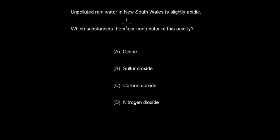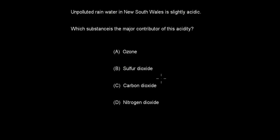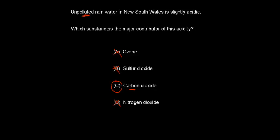Next question: unpolluted rainwater in New South Wales is slightly acidic. Which substance is the major contributor to this acidity? A, ozone. B, sulfur dioxide. C, carbon dioxide. D, nitrogen dioxide. The correct answer is C. Carbon dioxide is the substance that contributes most to the acidity of unpolluted rainwater. Nitrogen dioxide and sulfur dioxide are associated with pollution, not unpolluted conditions, and ozone doesn't really cause a difference in acidity.